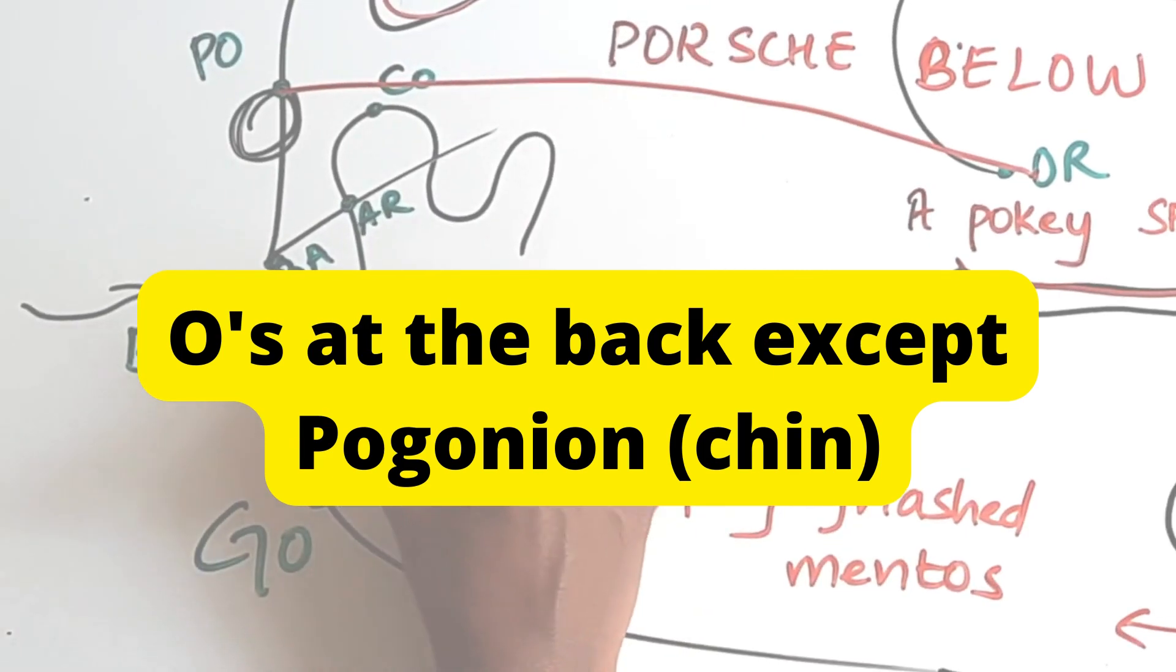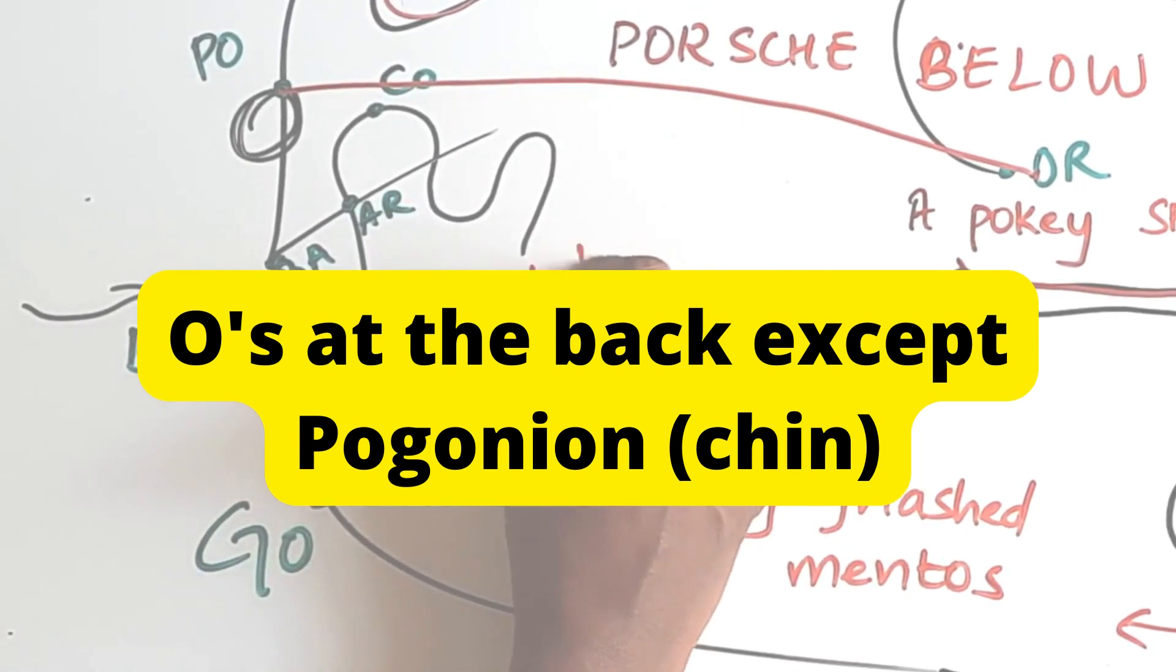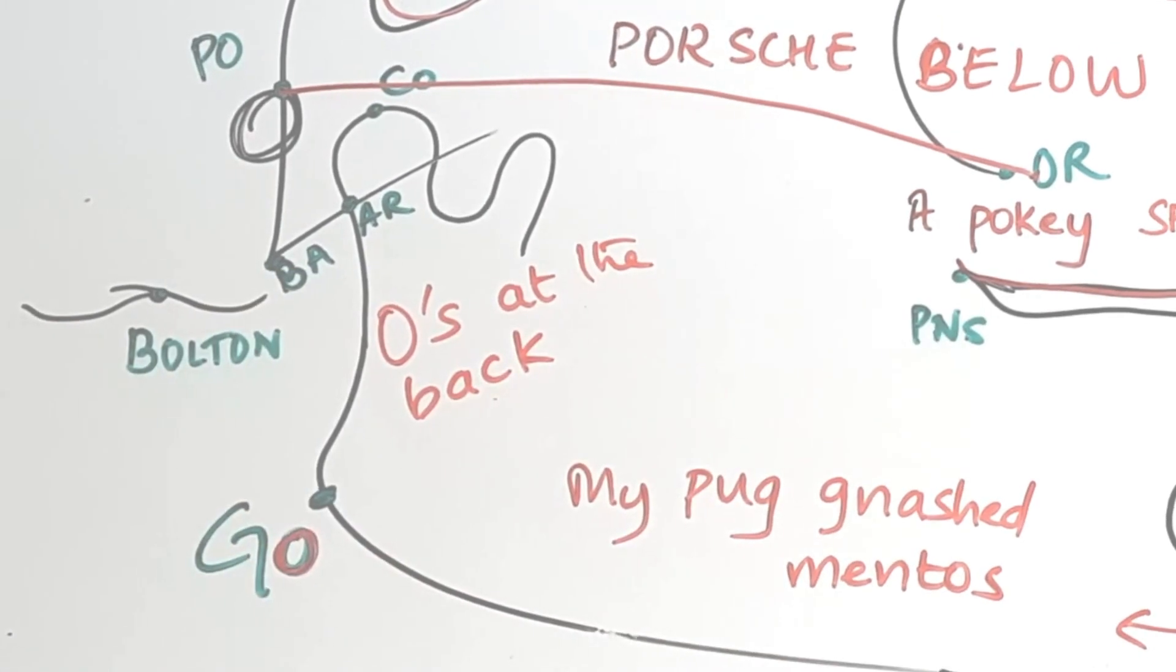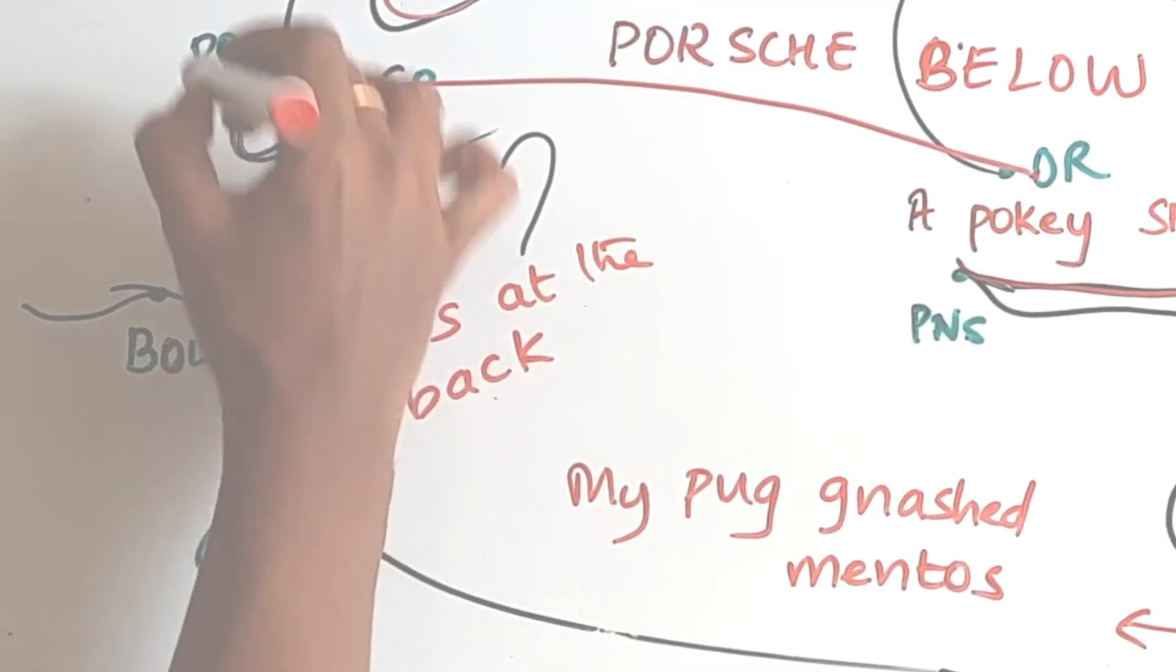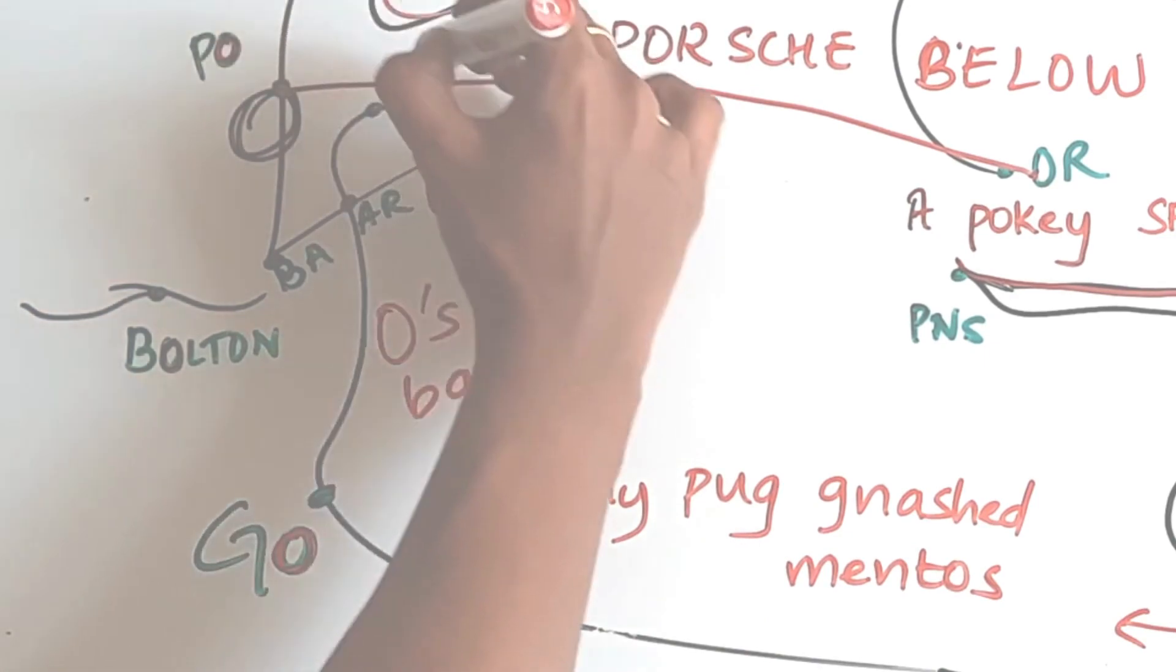Remember now, the O's are at the back. Exception is pogonion, which is at the chin. Those at the back are GO, BO, PO, and CO. Gonion, Bolton's point, porion, and condylar.